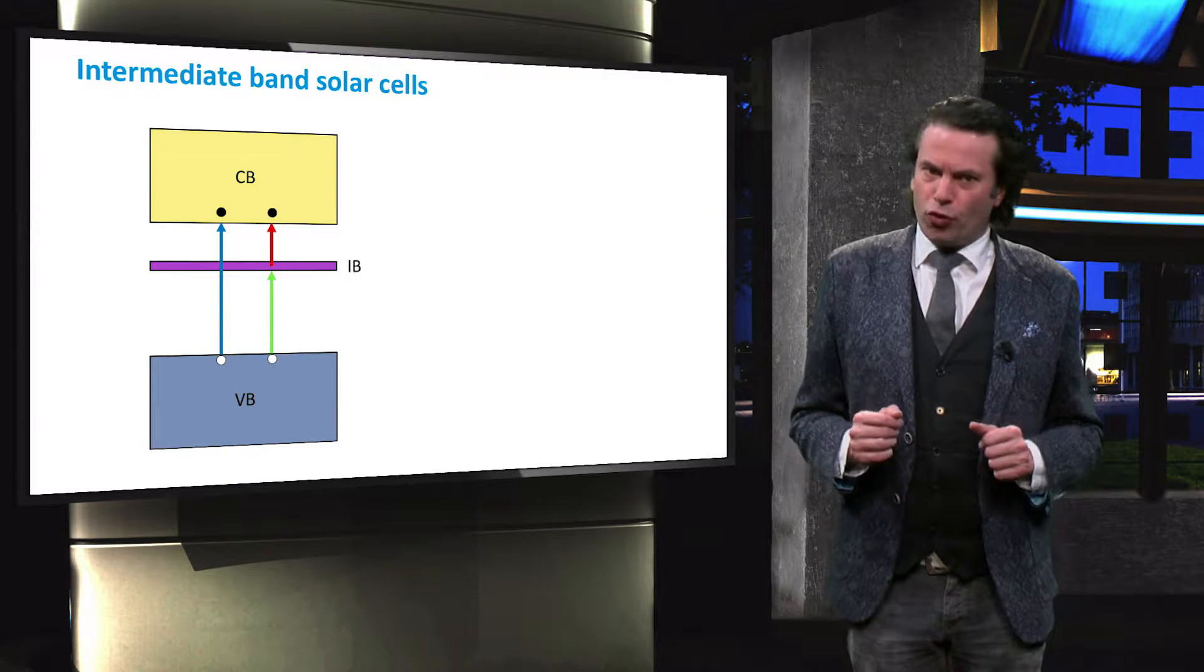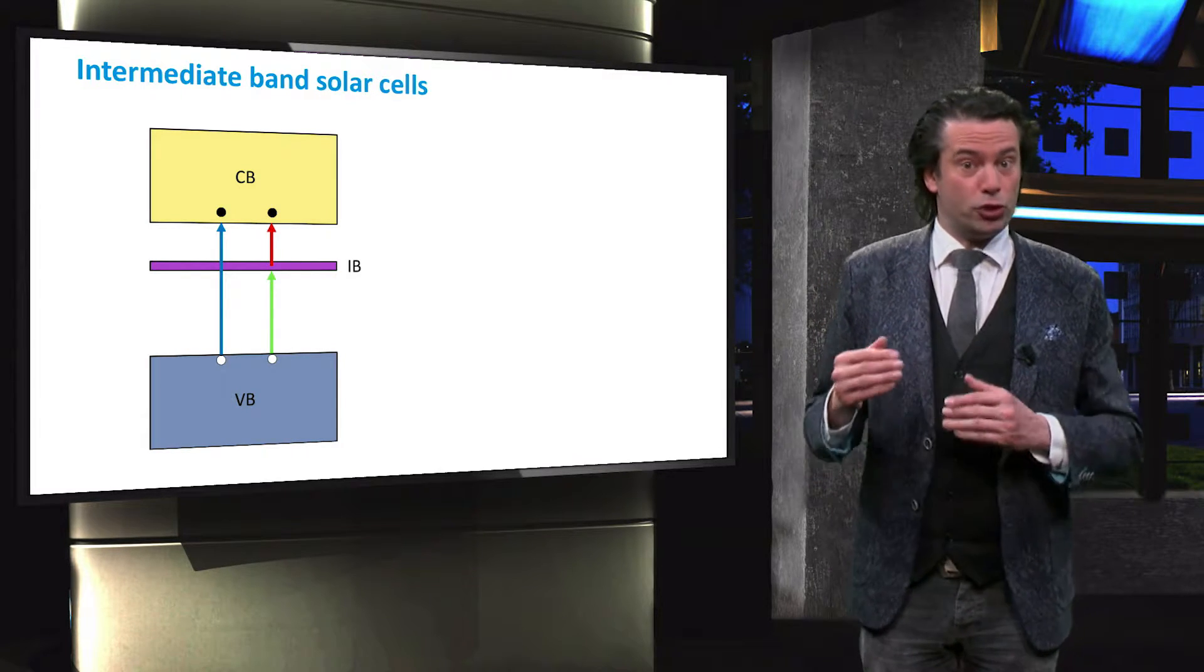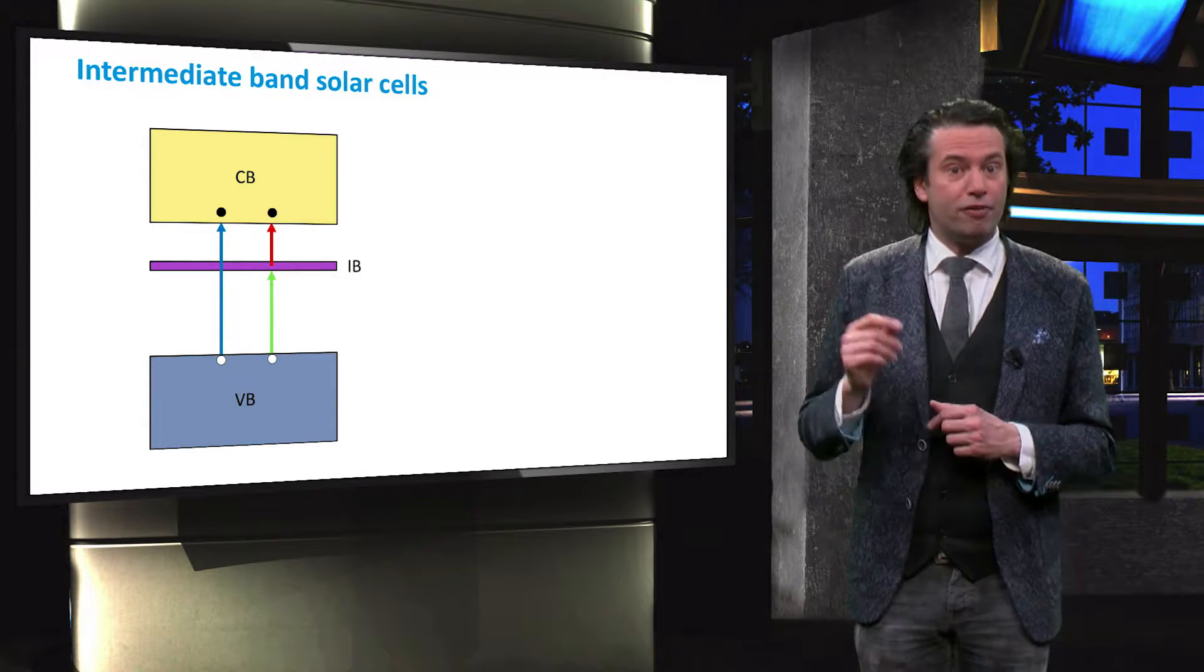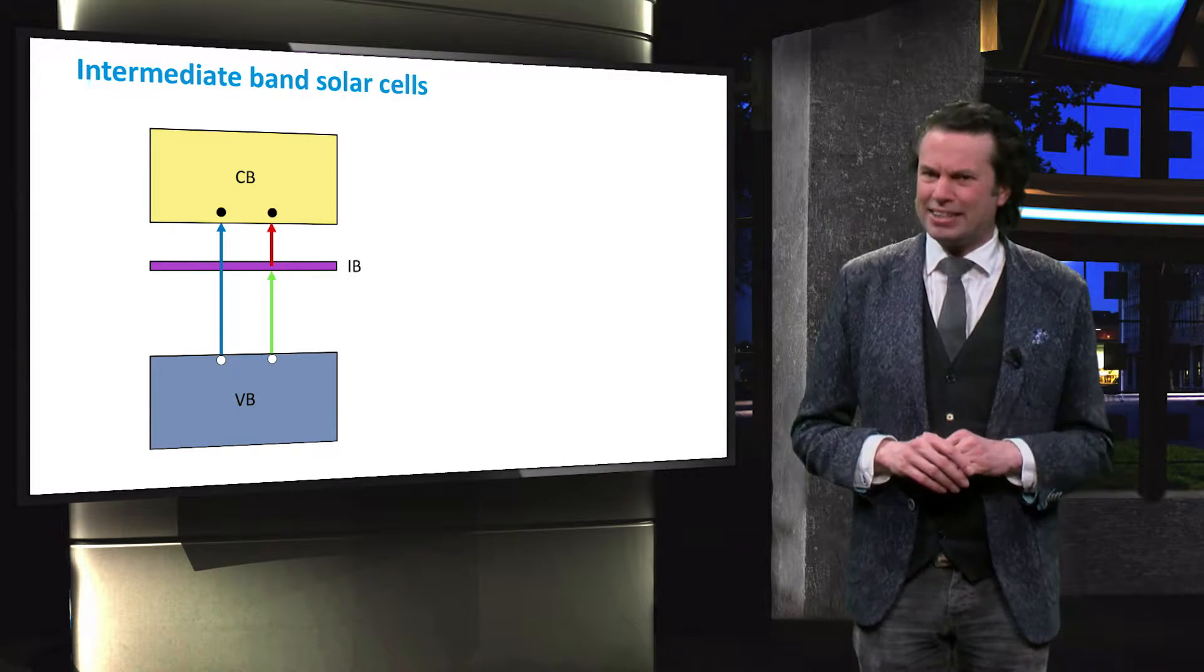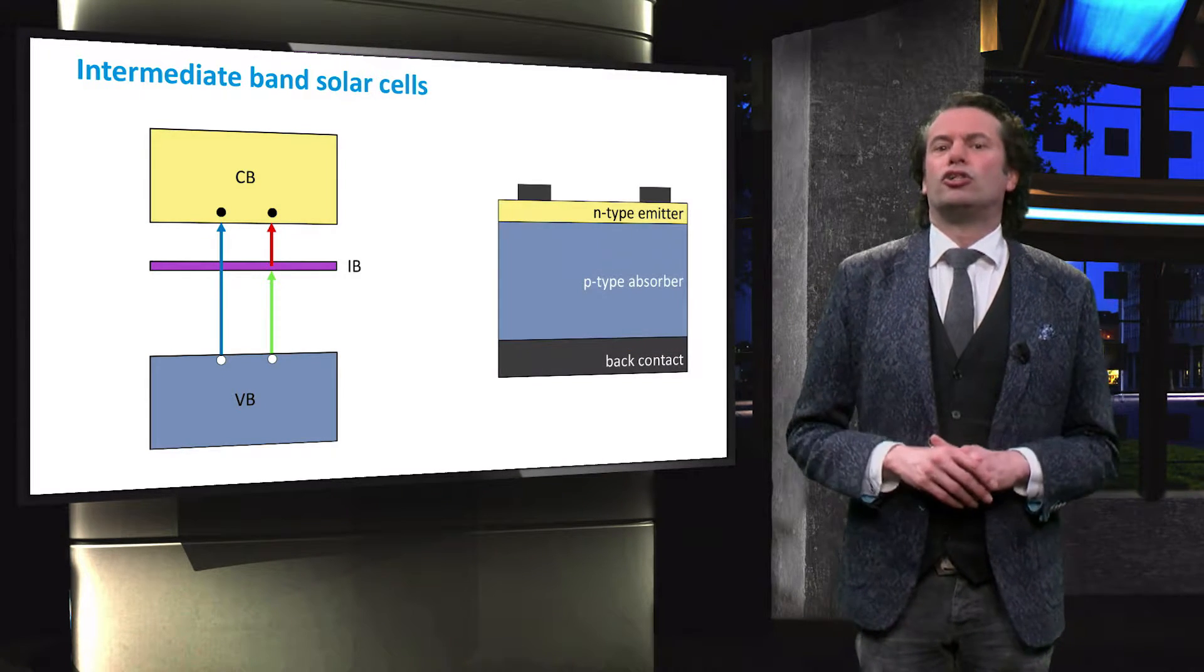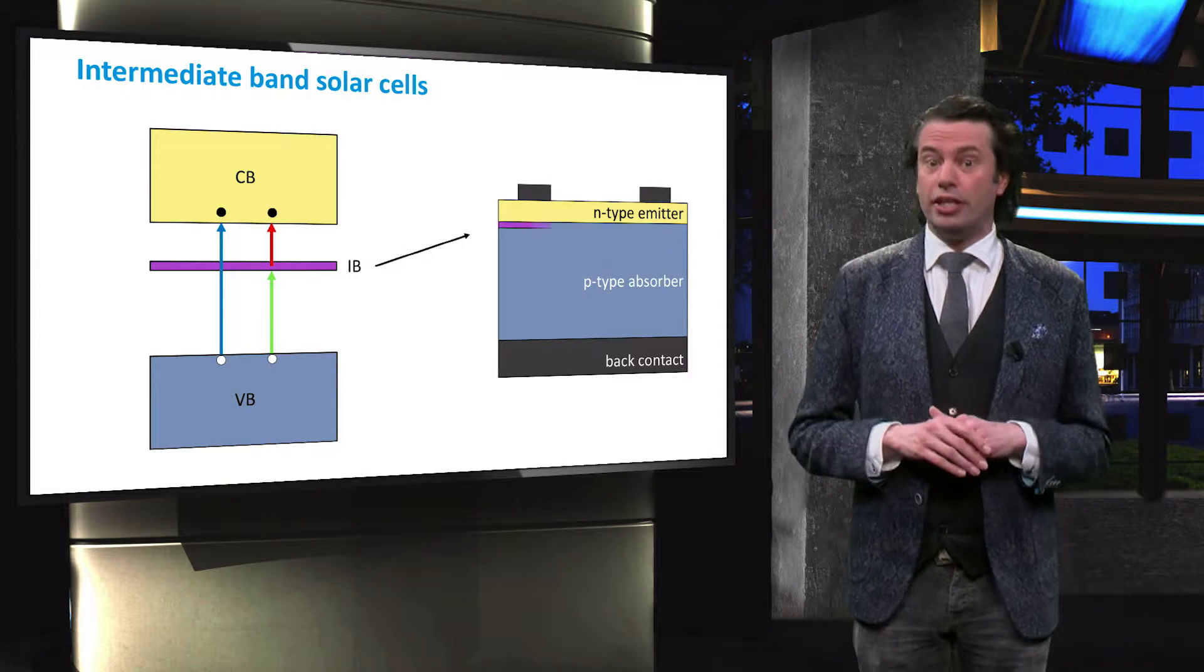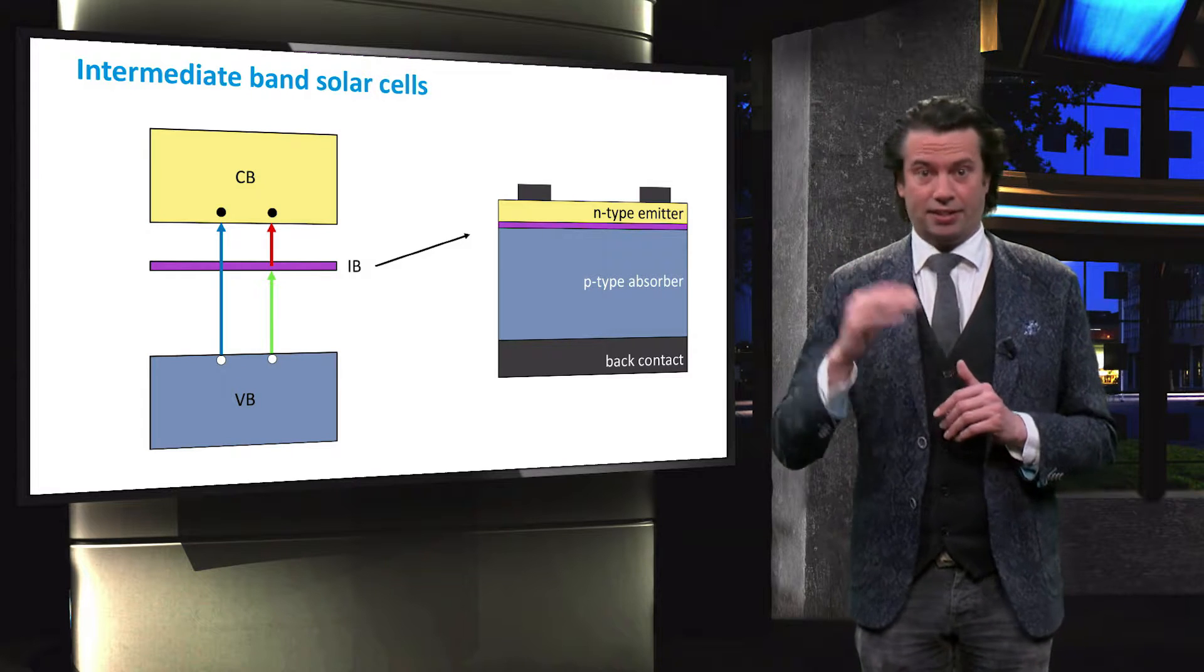The absorption of two photons with energies smaller than the bandgap energy can therefore result in the generation of an electron-hole pair. Realizing intermediate bands is not an easy feat. In such solar cells, a layer with the intermediate states is placed in between the P and N layers.